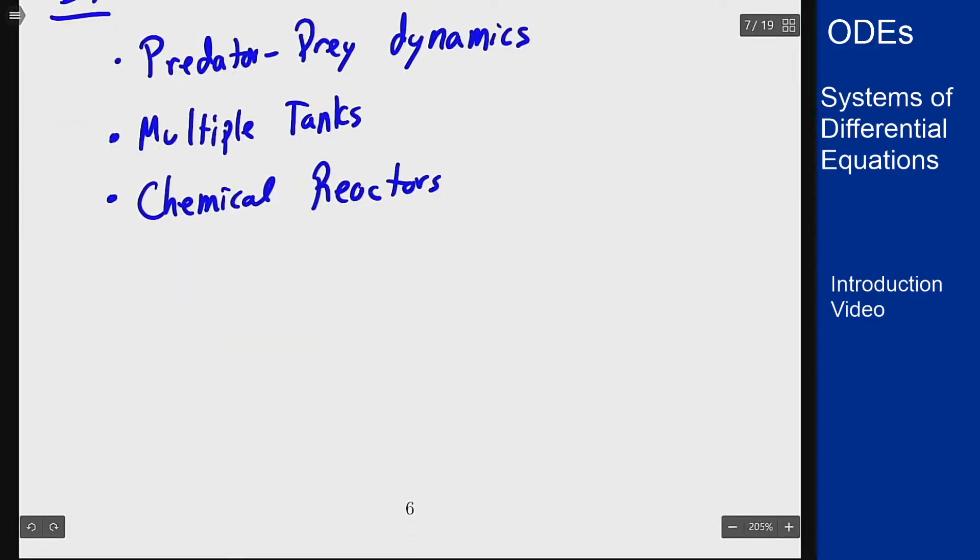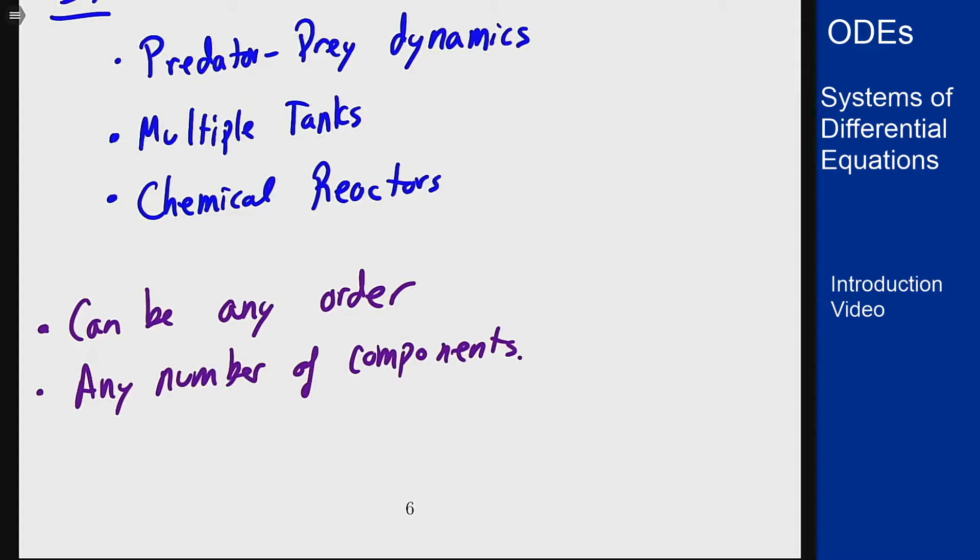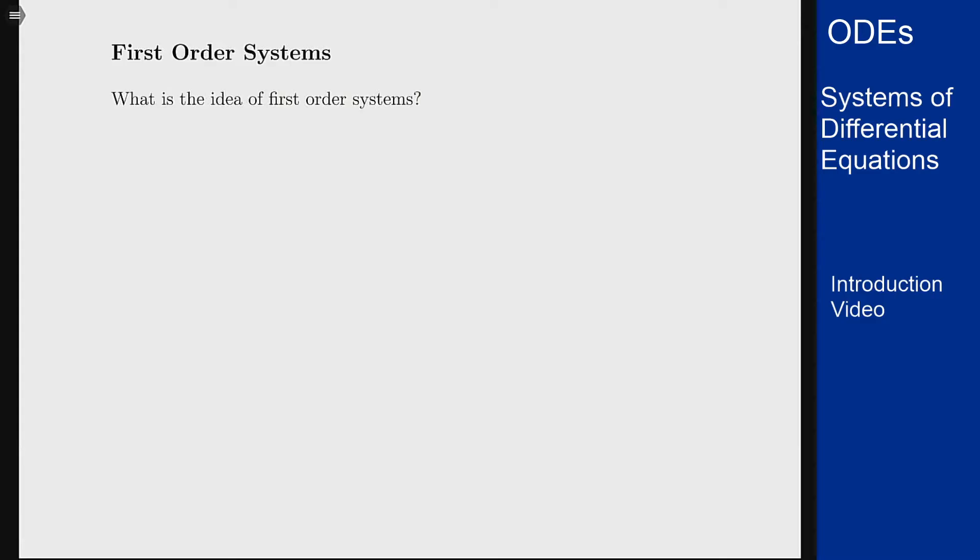You can talk about systems of any order or any number of components, but as we'll see, as both of these increase, things get more and more complicated. So we're going to spend a lot of our time focused on first order systems because this will be the simplest case that we can look at here.